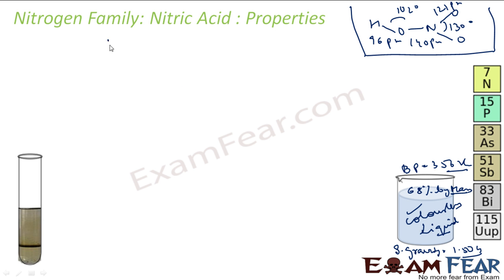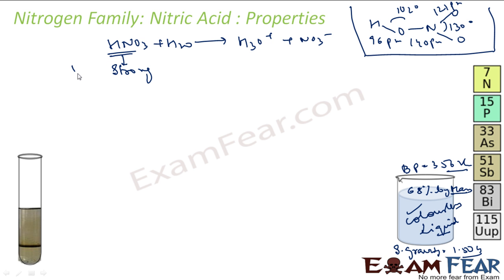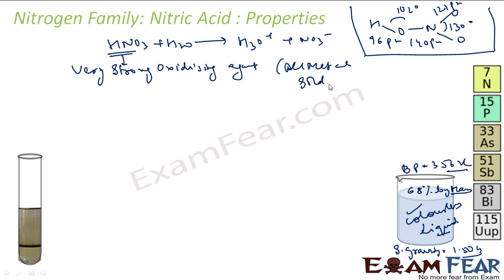Nitric acid is a very strong acid. When dissolved in water, it immediately breaks into hydronium ions and NO₃⁻ ions. Concentrated nitric acid is also a very strong oxidizing agent — it attacks almost all metals except gold and platinum.